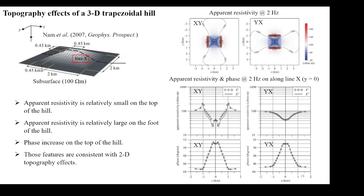From this slide, I will show the 3D topography effects. Naneto (2007) investigated the topography effects of a 3D trapezoidal hill. The upper right panel shows the apparent resistivity at 2 Hz — red indicates relatively large apparent resistivity and blue indicates relatively small apparent resistivity. The lower right panel shows apparent resistivity and phase along a line crossing the hill. Apparent resistivity is relatively small on top of the hill, while on the foot of the hill apparent resistivity is relatively large. Those features are consistent with the 2D topography effects shown before.